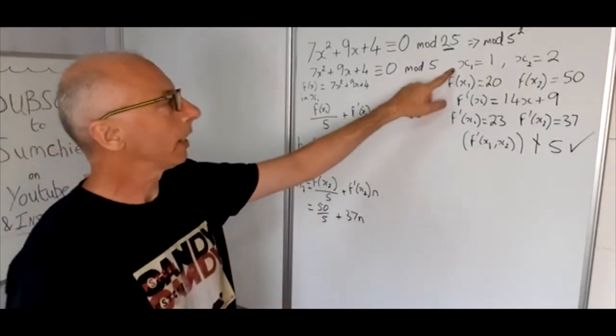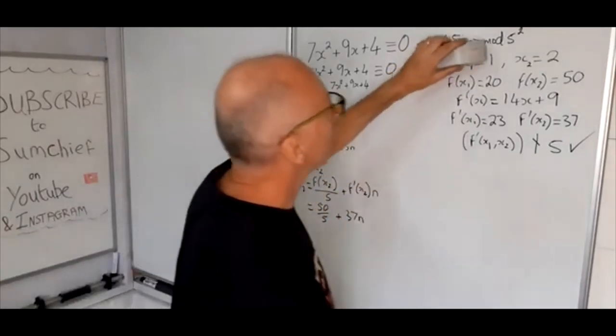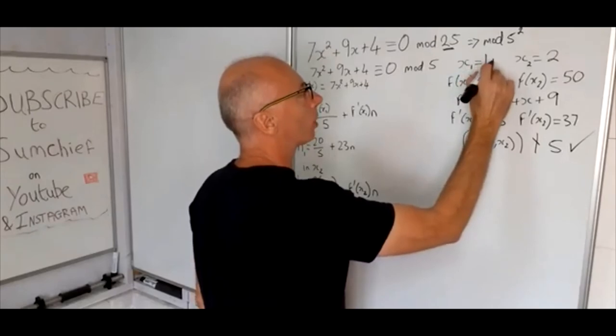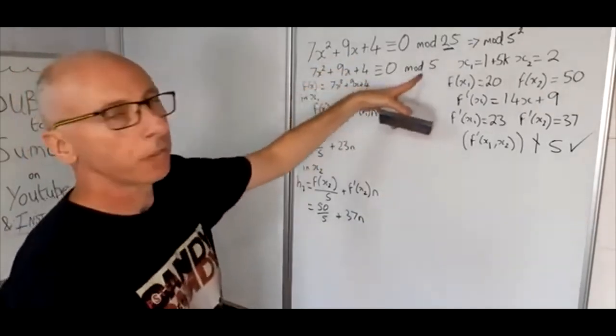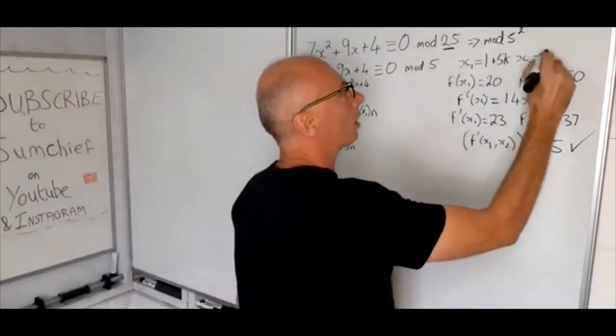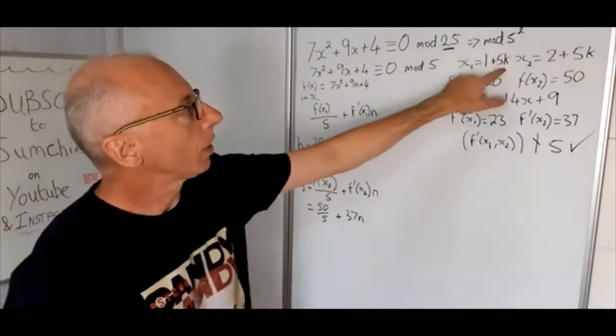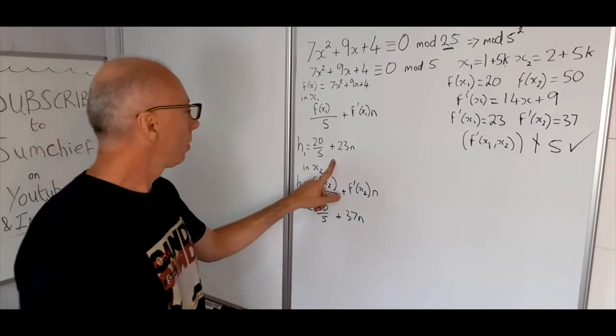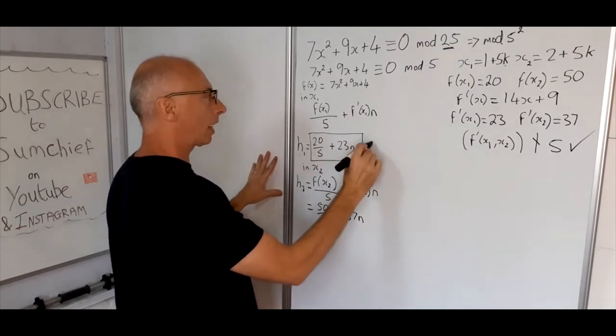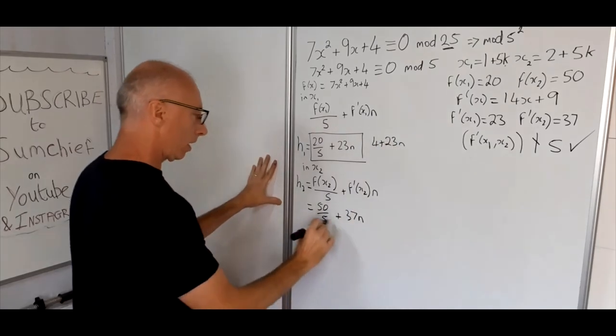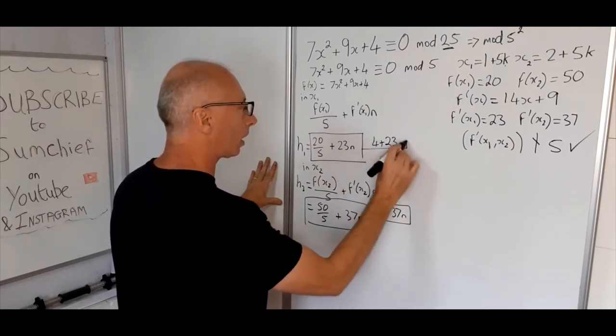Now one thing we can look at here with these solutions for x₁ and x₂, we can see that there are multiple solutions for that. So I'm just going to rewrite them to show that there's multiple solutions and it's 1 plus 5k for x₁. And same with here we'll have 2 plus 5k for x₂. So now what we're going to do we'll work out with this here. Now that will translate as -4 plus 23n and this one will translate here as -10 plus 37n. So that's our little important formula that we're going to need.